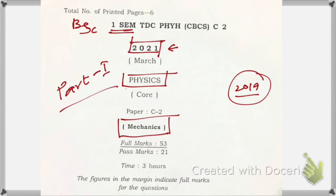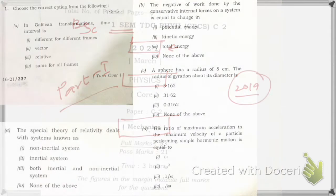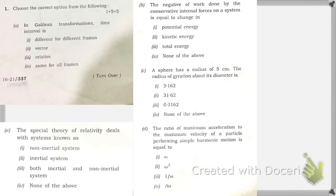Let's start. The first MCQ: in Galilean transformation, time interval is different for different frames, while the vector relative is the same for all. Which option is correct? The correct answer is that the time interval is the same for all frames — so the last option is correct.